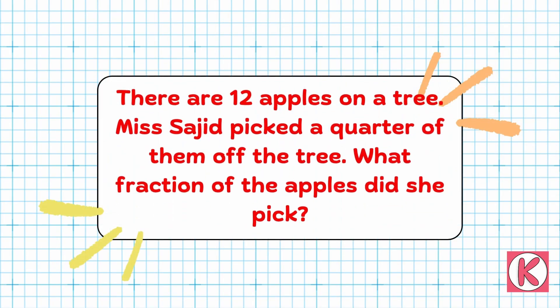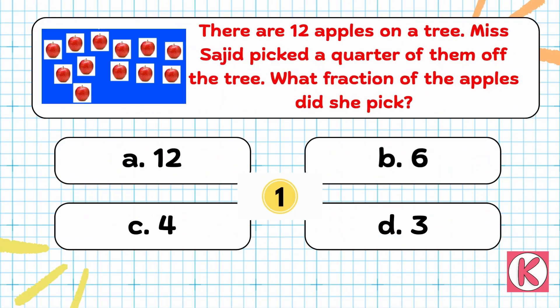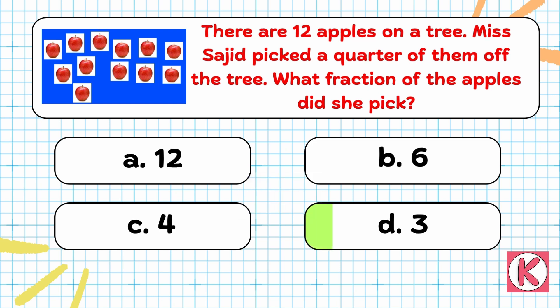Next question. There are 12 apples on a tree. Ms. Sajid picked a quarter of them off the tree. What fraction of the apples did she pick? Right answer: Option D — 3.